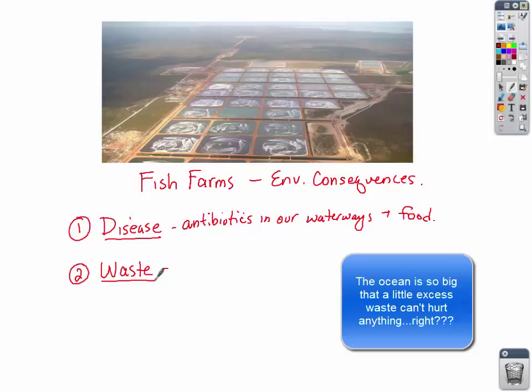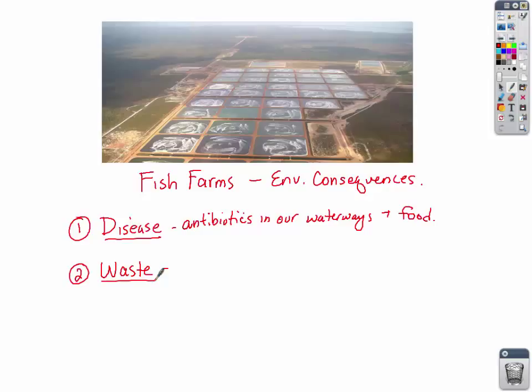Especially the farms in bays and coves and on shorelines, it's very easy to just throw it into the ocean. But taking that waste and throwing it into the ocean adds nutrients into a system that's delicately balanced. Now you have nutrient pollution and bacteria in the feces of the fish being added to ocean ecosystems — so that's a problem.